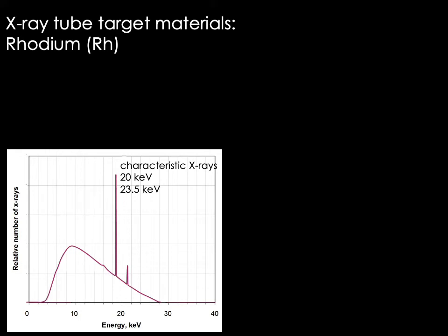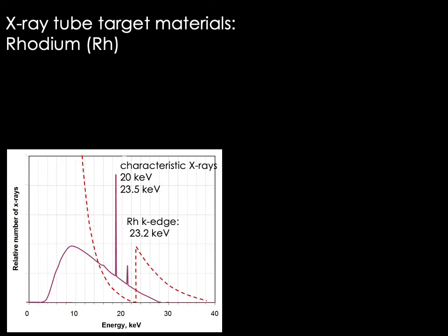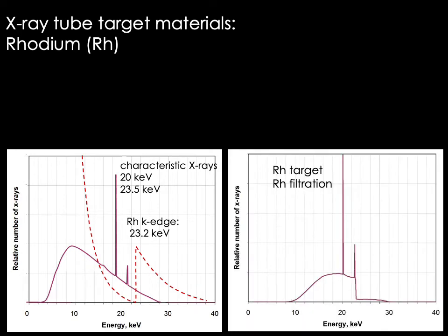For a rhodium target, characteristic x-rays are produced at 20 keV and 23.5 keV. If we place a molybdenum filter in the beam, because the k edge of molybdenum is 20 keV, we end up filtering out most of the characteristic x-rays at that energy — which we don't want. So in practice, we never use molybdenum filtration with a rhodium target. When we use a rhodium target, we always use rhodium filtration to preserve the characteristic energy peaks at 20 keV.